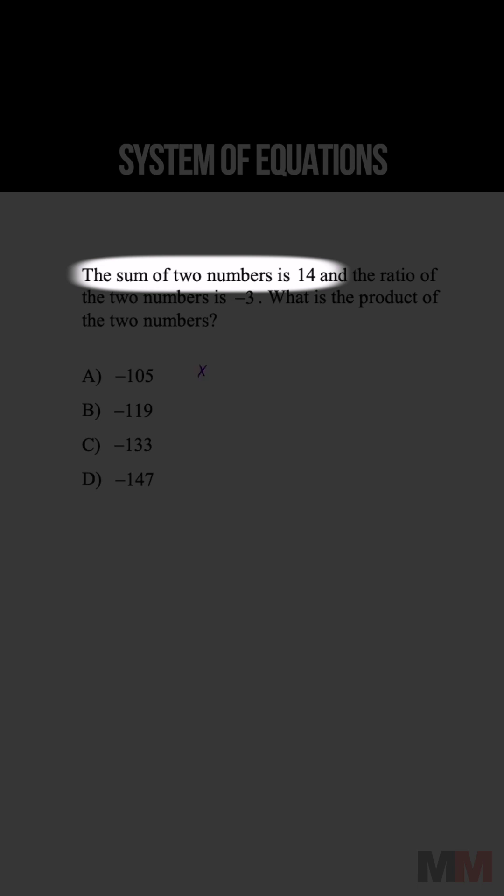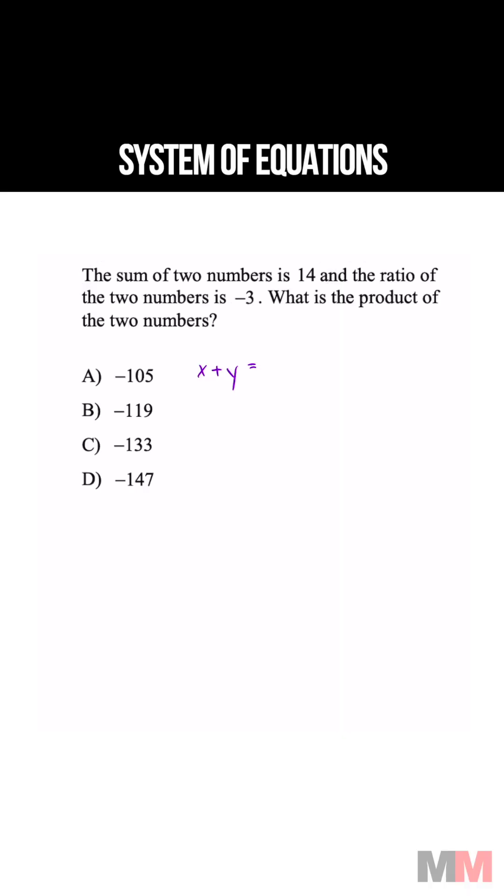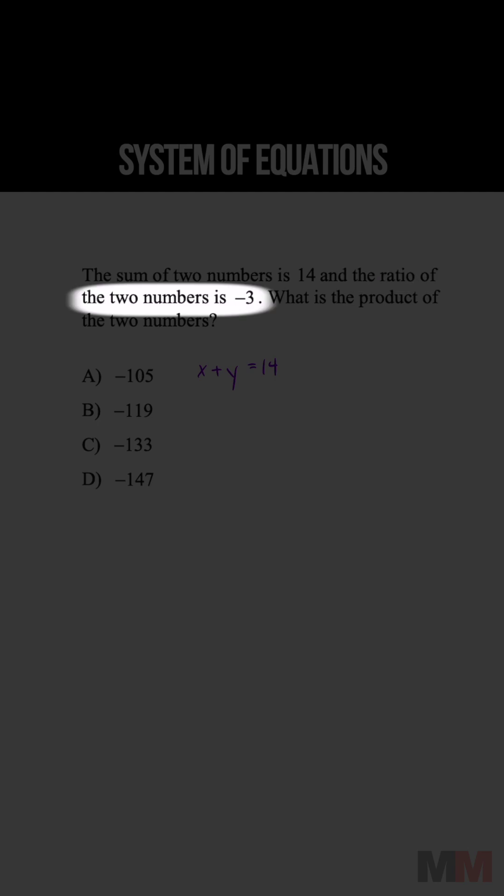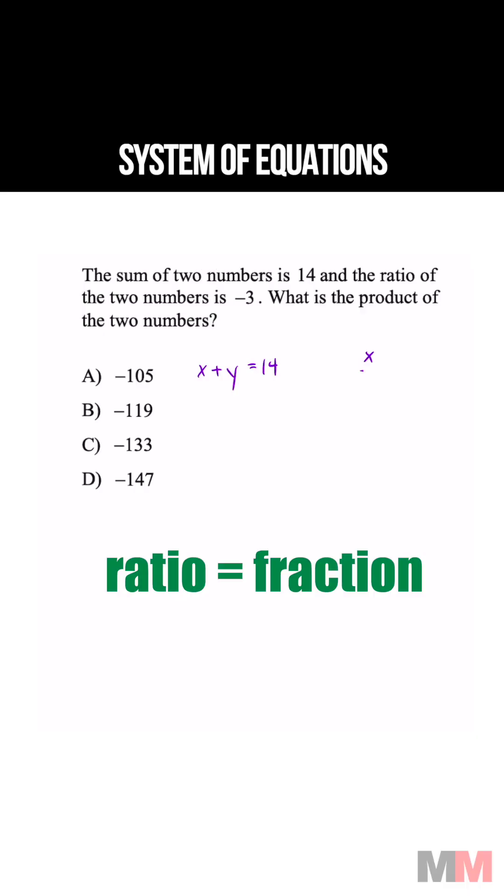The sum of two numbers is 14: x plus y equals 14. The ratio of the two numbers is negative 3: x over y equals negative 3. What is the product of the two numbers?